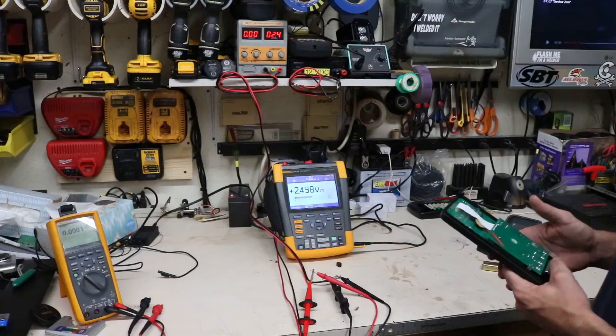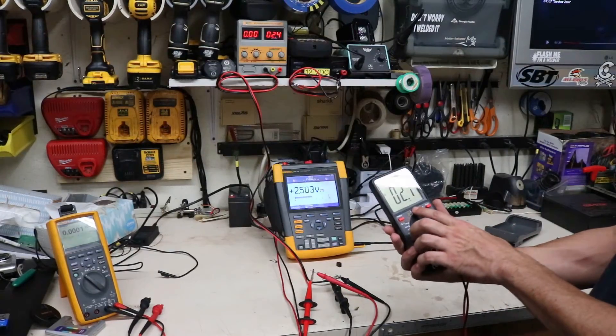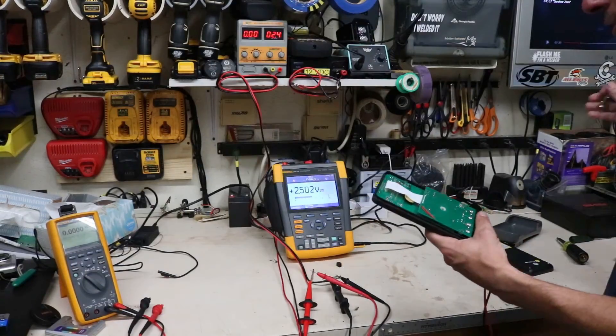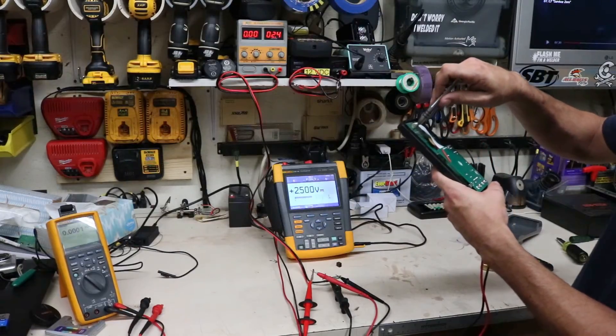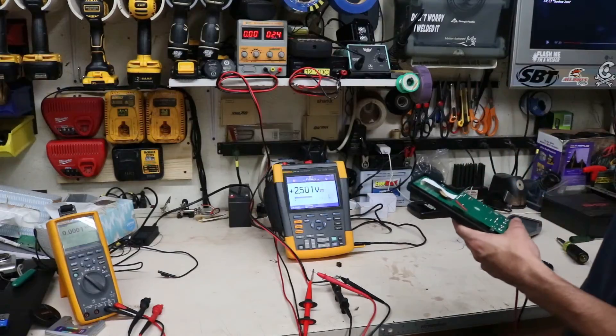About as close as it's going to get, I got it at 2.499. So we show 2.1 on this one. So we're going to take a precision screwdriver and put it in this pot here and rotate it to see if we can get that reading to come up.